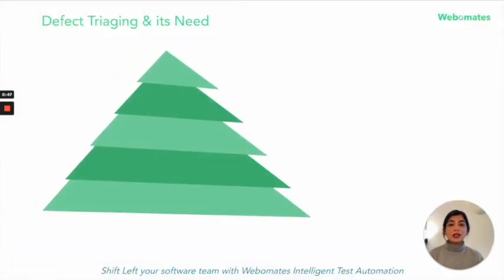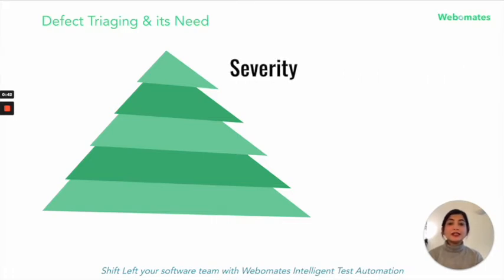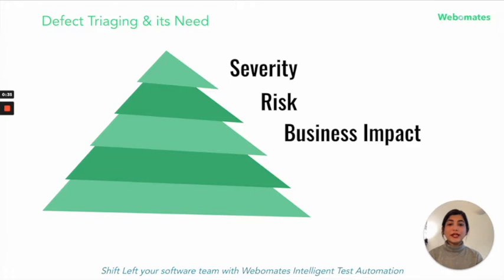Defect triage is a process to prioritize the defects based on severity, risks, and frequency of occurrence. The triaging mechanism helps prepare a process for testers and developers to fix as many defects as possible by prioritizing them based on parameters identified and fixed by the team.